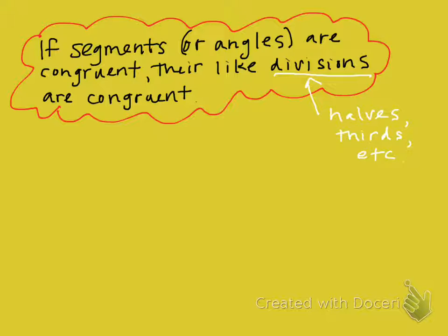The second theorem in the set of notes is kind of similar to the other one. The other one we started with smaller angles being congruent and then proving that their multiples or a bigger angle, the bigger angles are congruent. This one says kind of the opposite. We start off with a larger angle or segment, and we know that they're congruent. We can now say that their divisions or their smaller parts, either halves or thirds, are also congruent.